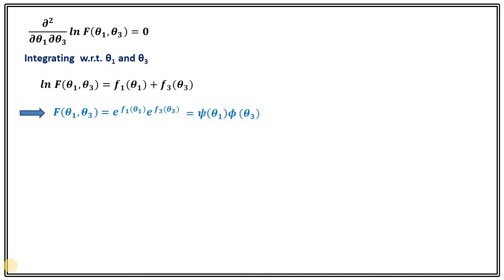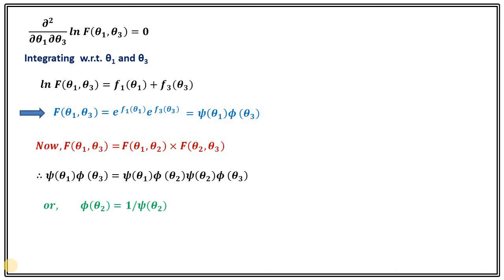In similar fashion we can write F(θ1, θ2) = ξ(θ1) · φ(θ2) and F(θ2, θ3) = ξ(θ2) · φ(θ3). Substituting into the known relation and simplifying, we find that φ(θ2) = 1/ψ(θ2), and similarly φ(θ1) = 1/ψ(θ1) and φ(θ3) = 1/ψ(θ3). Using this relation, F(θ1, θ2) = ξ(θ1) · φ(θ2) = ψ(θ1) / ψ(θ2).